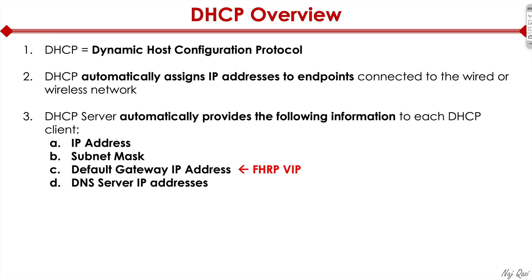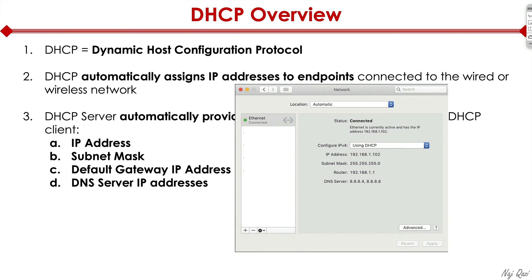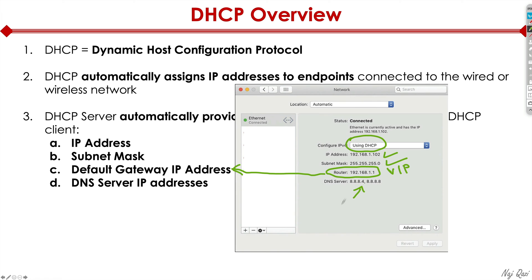The DHCP server also provides DNS server IP addresses. Typically you would have redundant IP addresses. I took a snapshot of my laptop here — it's configured via DHCP, picking up its IP automatically, subnet mask, and the router as the default gateway, which is a virtual IP. The DNS servers in this case are Google public DNS servers.